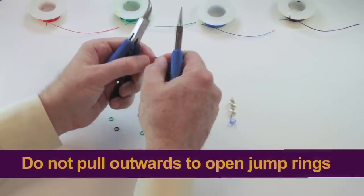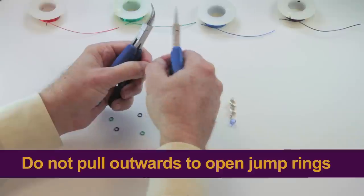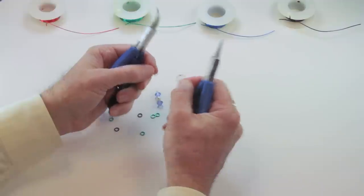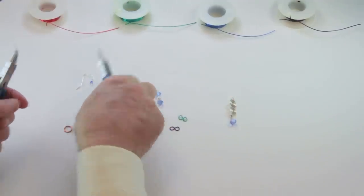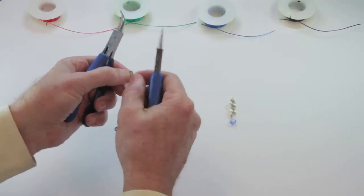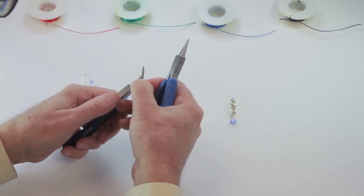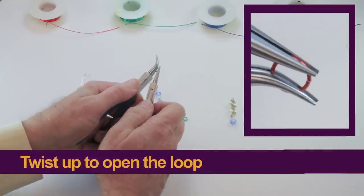And what you don't do is pull it this way, because that will ruin the shape. So you twist up and down. If we were going to take this jump ring, a much smaller one, this is a medium sized jump ring. So the opening is in between the pliers.